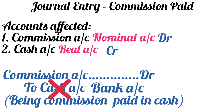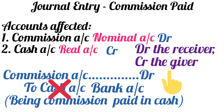Bank account is a personal account. The golden rule for personal accounts says: debit the receiver, credit the giver. In this case, the payment will be made by the bank by deducting the amount from our bank account, hence the bank will be the giver, so bank account will be credited. The journal entry will become: commission account debit to bank account. The narration will be: being commission paid by check.